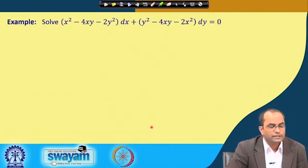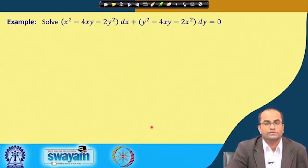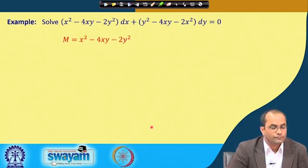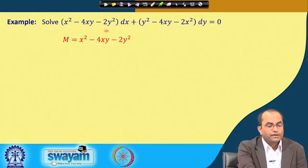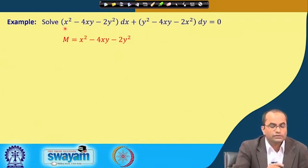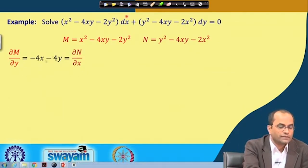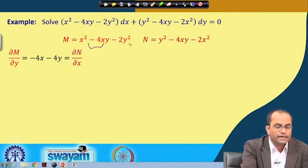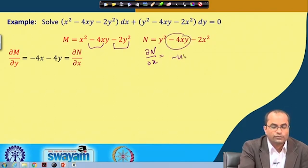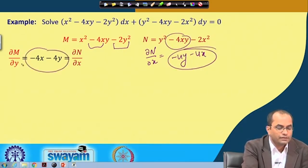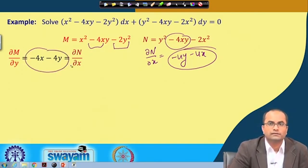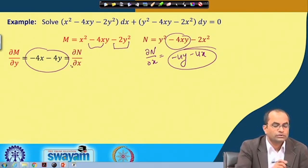Let us go through an example. We take (x² − 4xy − 2y²)dx + (y² − 4xy − 2x²)dy = 0. Here M = x² − 4xy − 2y² and N = y² − 4xy − 2x². We first check exactness: ∂M/∂y = −4x − 4y and ∂N/∂x = −4y − 4x. Both are equal, so the condition ∂M/∂y = ∂N/∂x is satisfied and the given equation is exact.